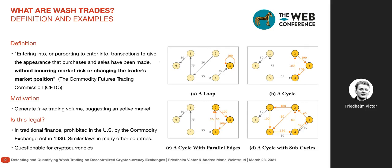In figure B you could have a slightly more complex example where you have three accounts trading in a cycle, cycling through 100 units of assets, and they end up again with no change in their market position. You could also have more complicated examples where trades are split up or the cycles contain sub-cycles, but the takeaway is that the participants always don't change their market position and don't incur any risk.